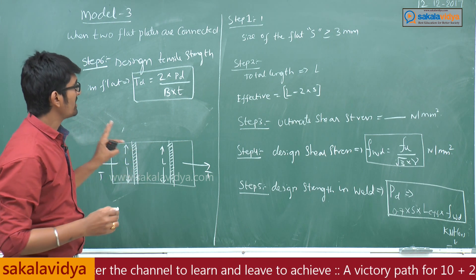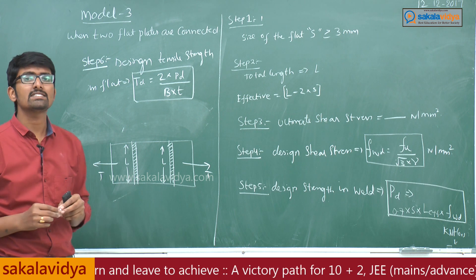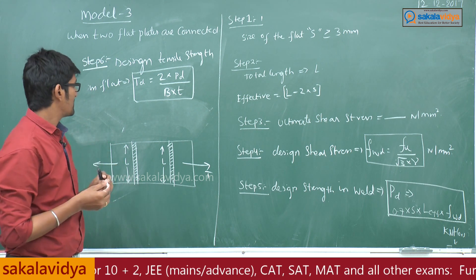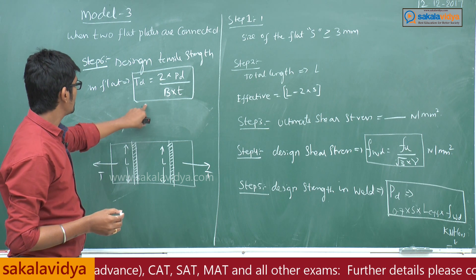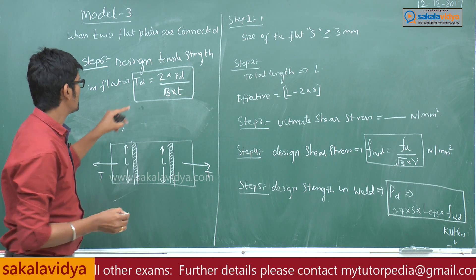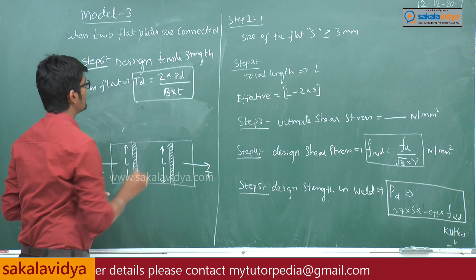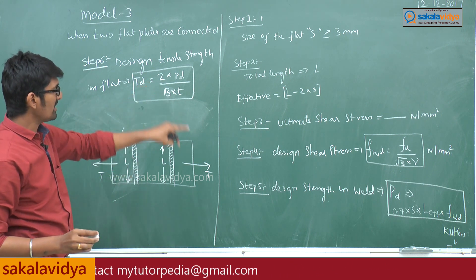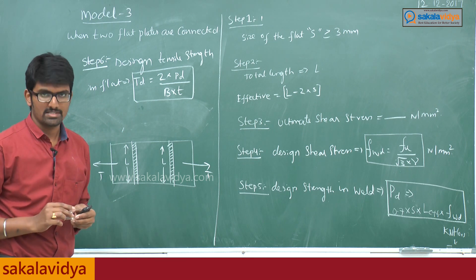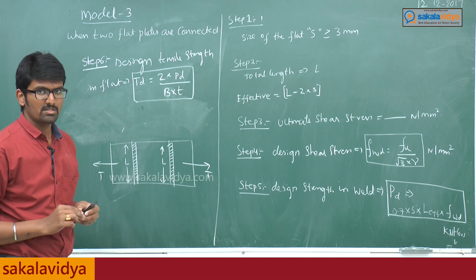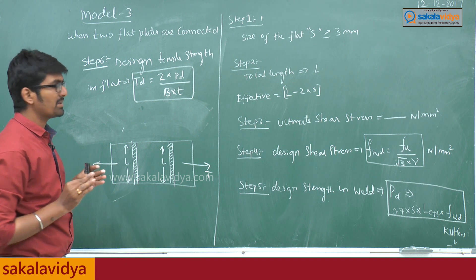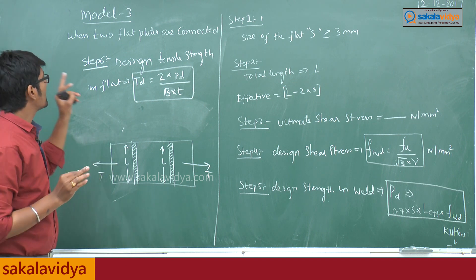In this particular case, we need to find the design tensile strength of the plates or flats. The design tensile strength of the flat, denoted T_xd, is equal to 2 times the design strength of the weld divided by the area of the plates. So we need to derive the design tensile strength of the flats.